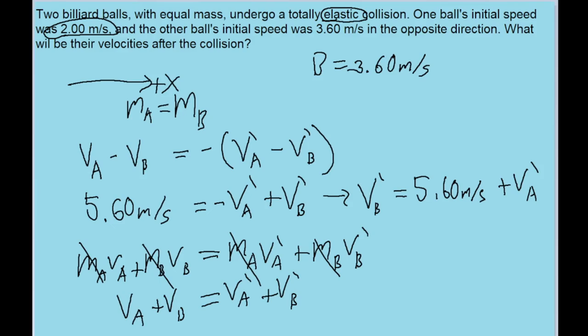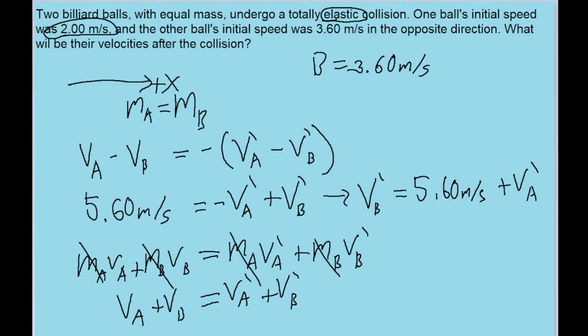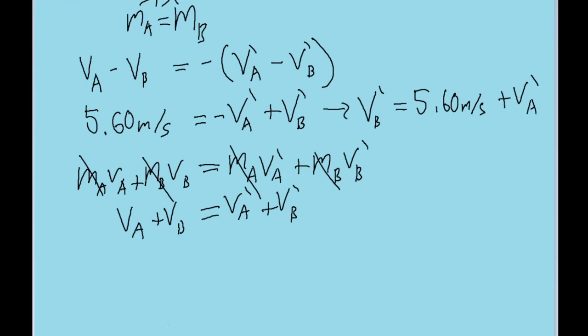And this is very nice, because we can take this other equation we found and plug it into this new equation, and it'll turn this into an equation with only one unknown value. So V_A plus V_B, that's 2 plus negative 3.6 meters per second. So this term on the left is equal to negative 1.60 meters per second.